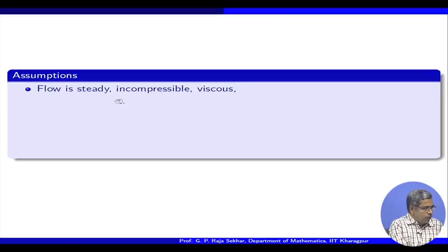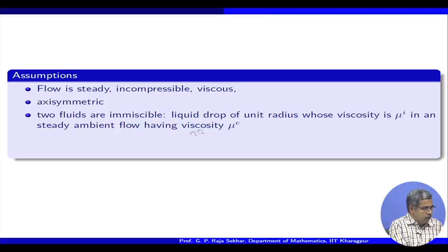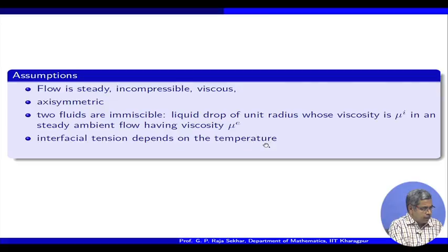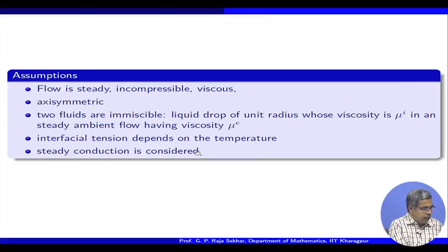Today we are going to discuss the case with the assumption that surface tension depends linearly on temperature and additional assumptions: flow is steady, incompressible and viscous, and axisymmetric. Two fluids are immiscible — we have a liquid drop of viscosity mu_i in a fluid of viscosity mu_e. Interfacial tension depends on the temperature, and steady conduction is considered. Since we are assuming interfacial tension depends on temperature, there should be a corresponding temperature problem, so we will spend a few minutes on this before we solve the problem.